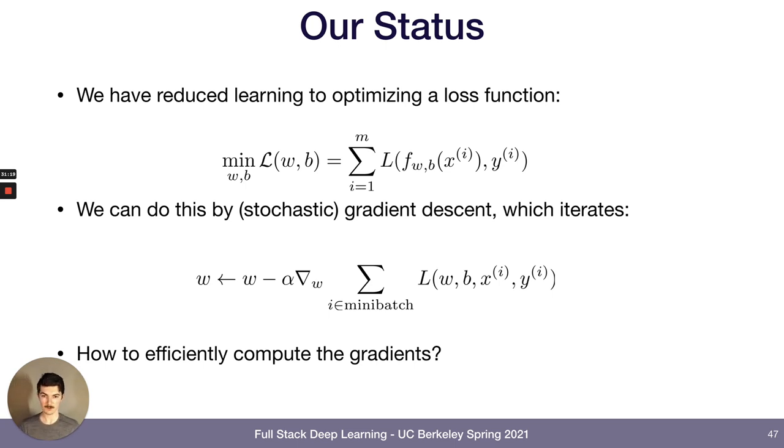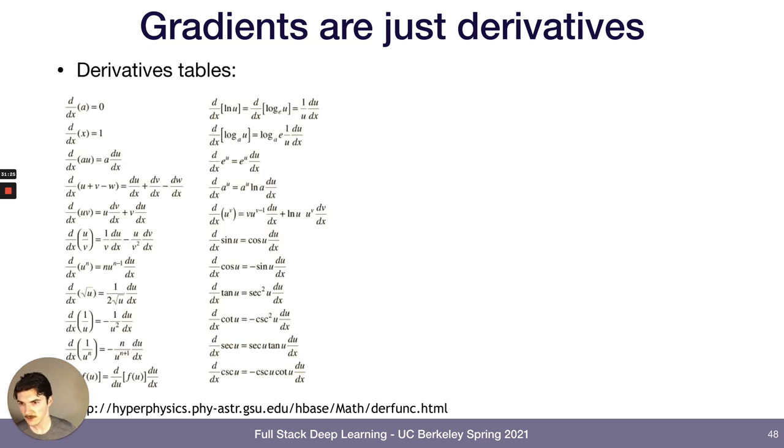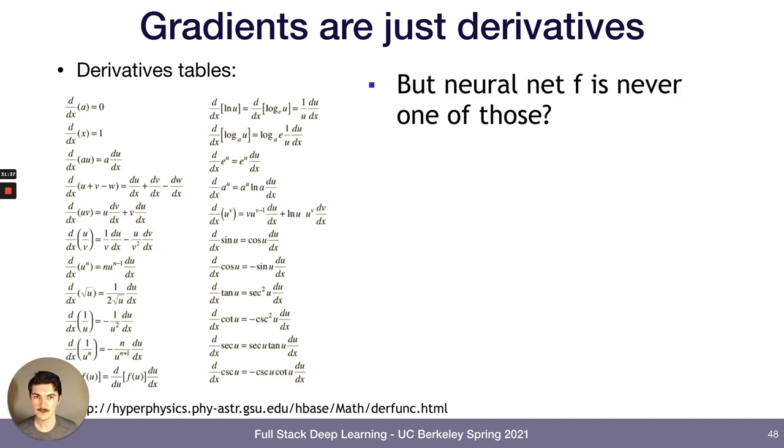But how do we efficiently compute these gradients? It's easy to say, well, we'll compute the gradient. How do we actually do it? So gradients, just another word for derivatives. And derivatives, you've seen in your calculus class. It's just, you can do it symbolically, you can figure out given a function what its gradient is. But the neural net is never just like e to the power of x or something like that. It's never going to be that easy to compute its gradient.